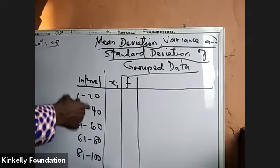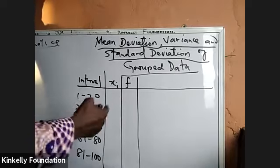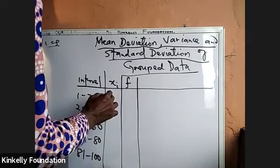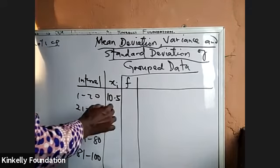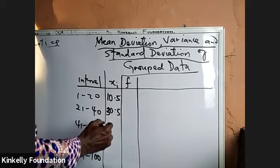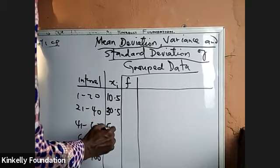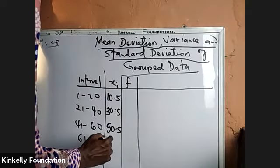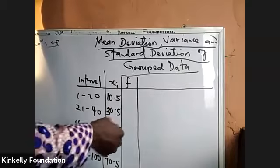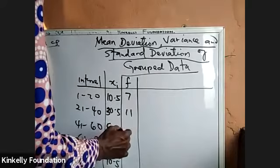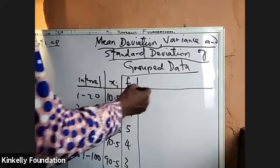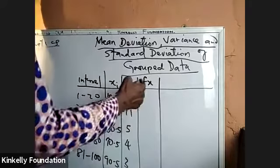The class width is 20. So 1+20 divided by 2 gives 10.5; adding 20 each time gives midpoints of 10.5, 30.5, 50.5, 70.5, and 90.5. The corresponding frequencies are 7, 11, 5, 4, and 3. From this we can compute the fx column: frequency times the midpoint.